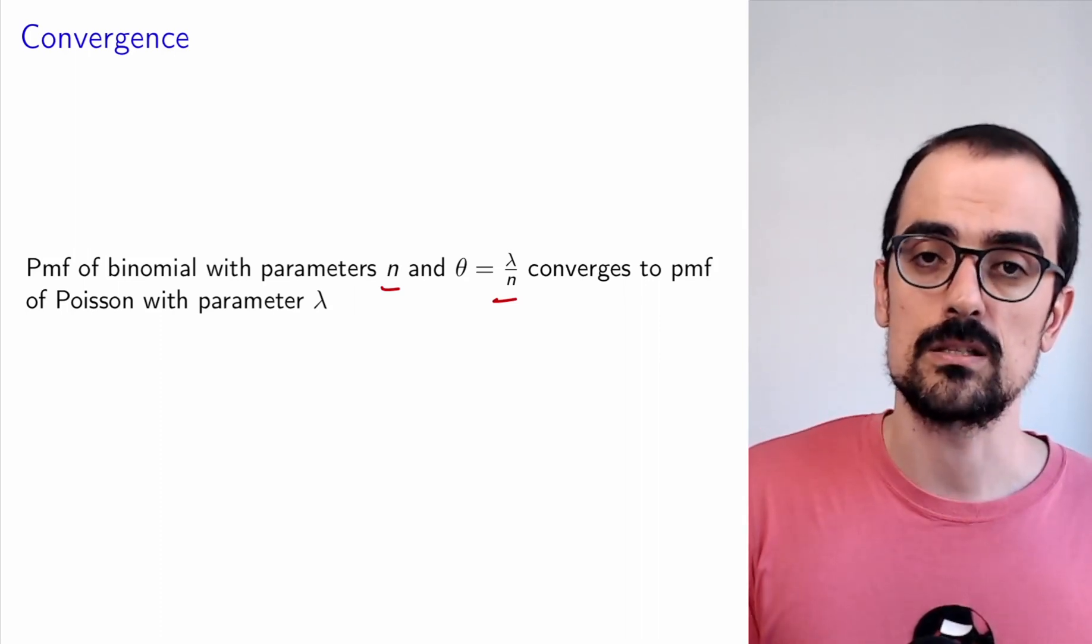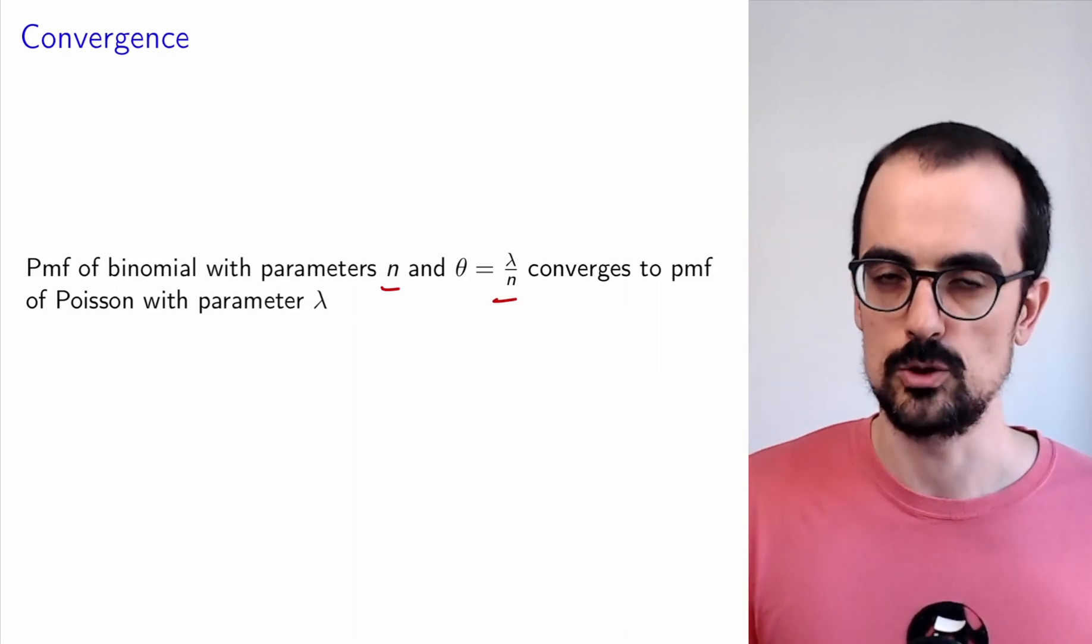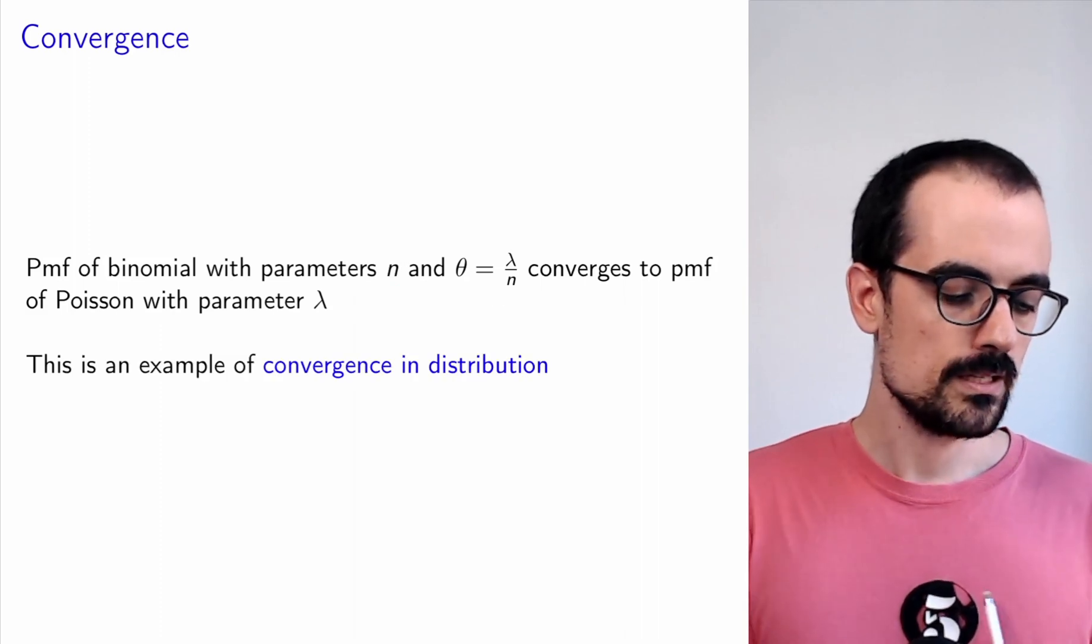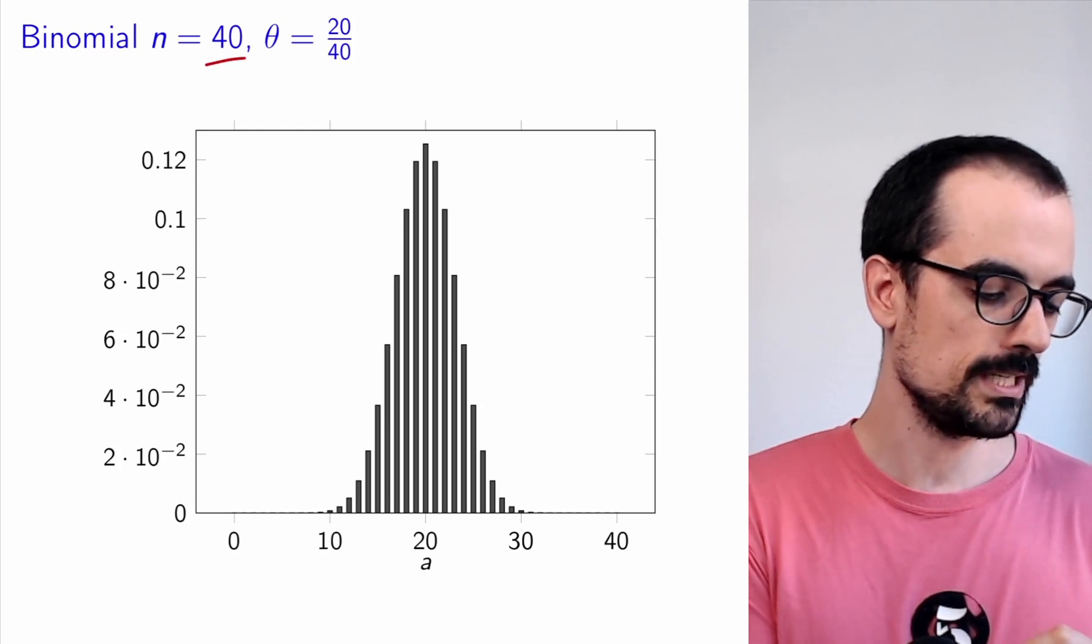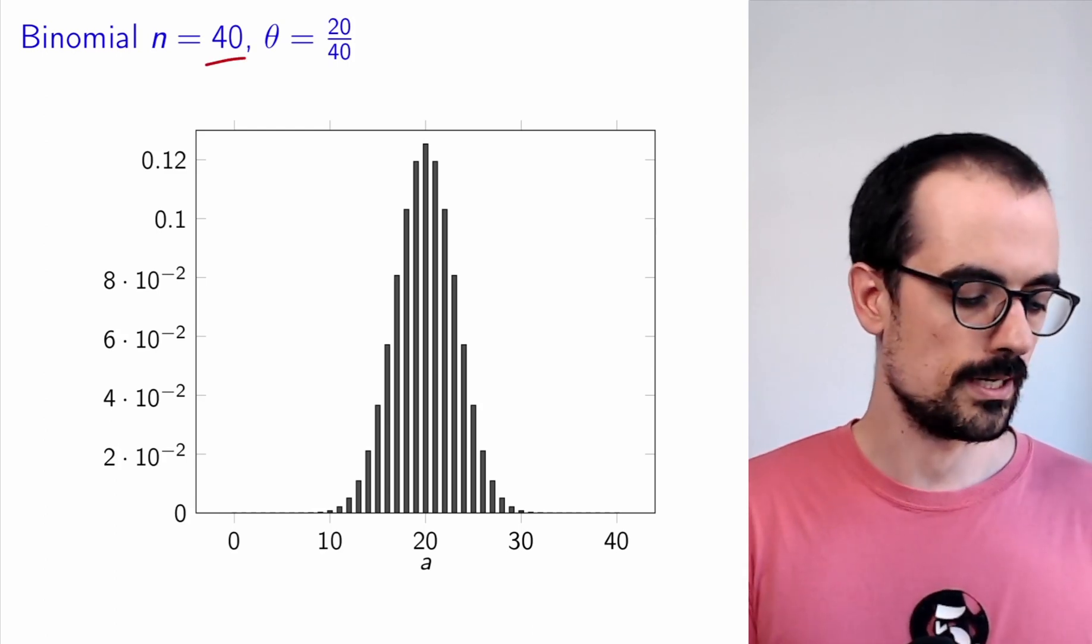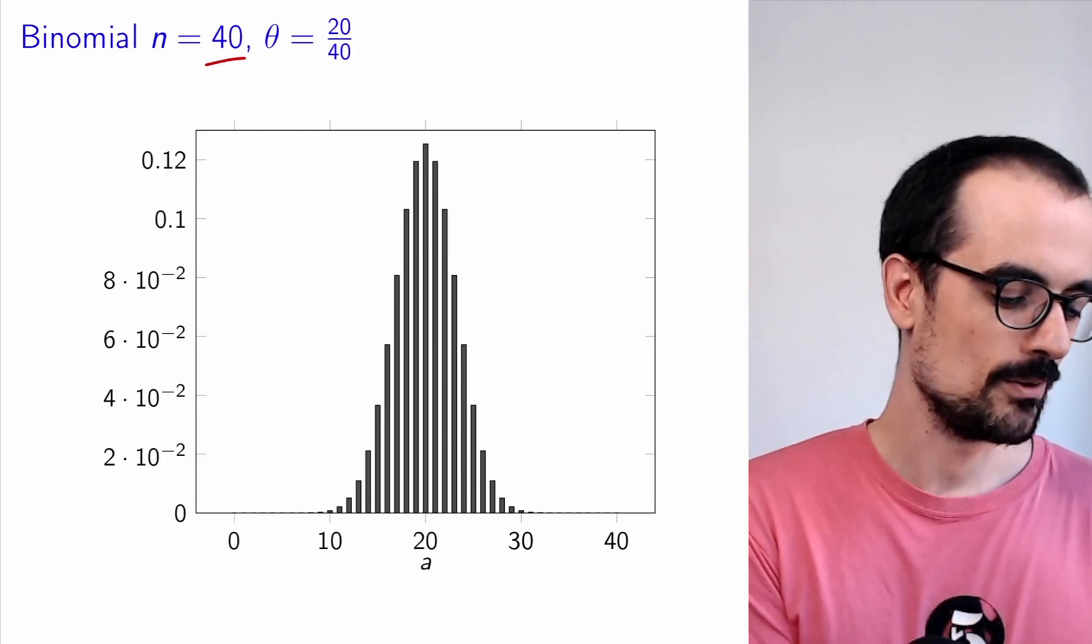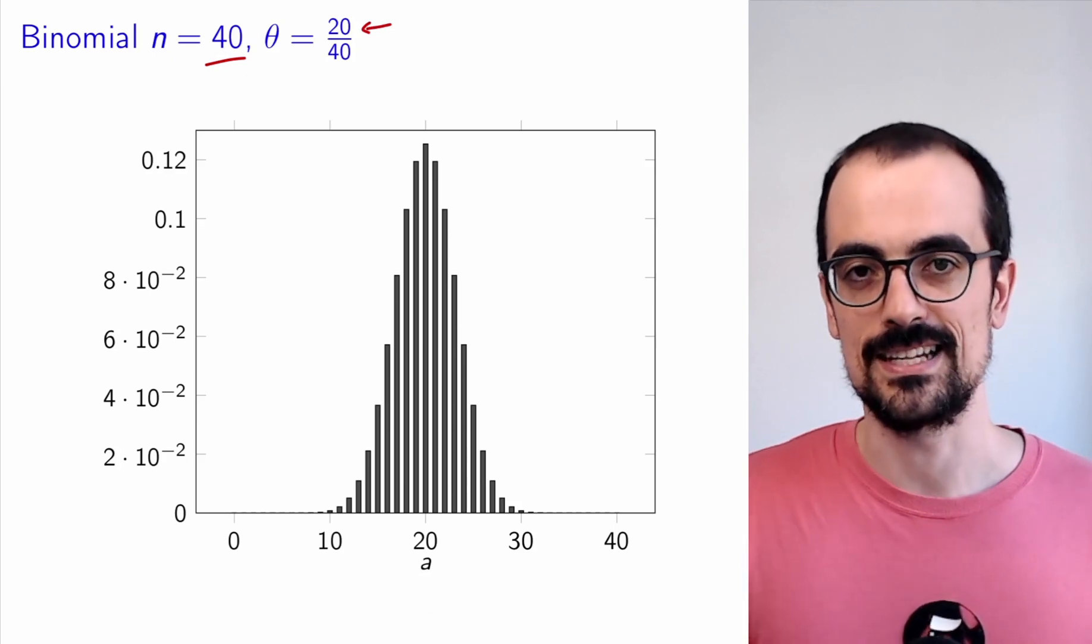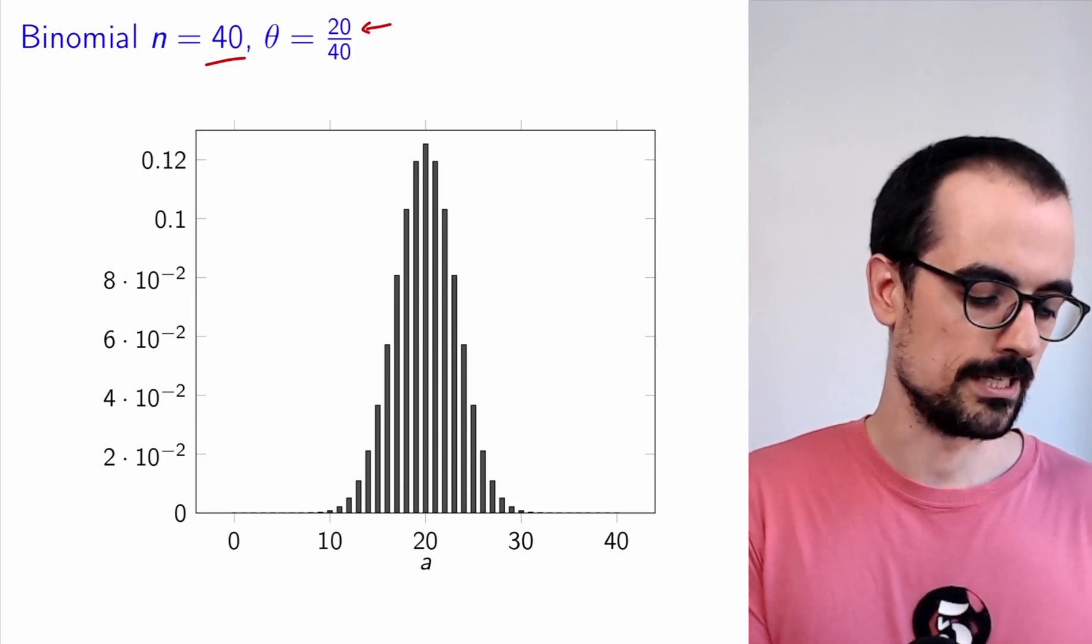In general, when we do mathematical derivations, it's always really good to try to visualize what is going on kind of intuitively. In our case, we had these binomial distributions. We're going to fix lambda equals 20, and then we're going to change n and see if we see this convergence behavior. We had this binomial PMF, and then we took n to infinity. So we're increasing n.